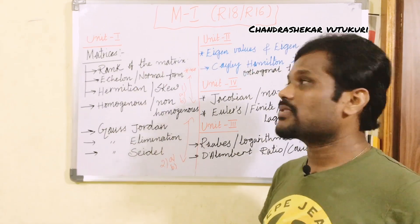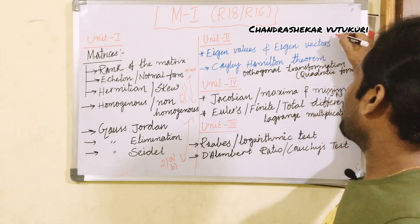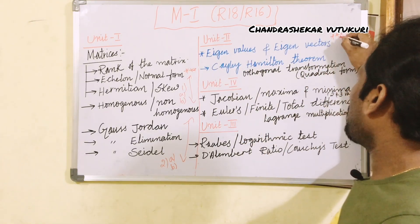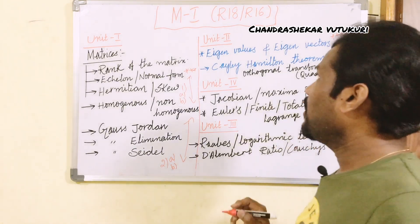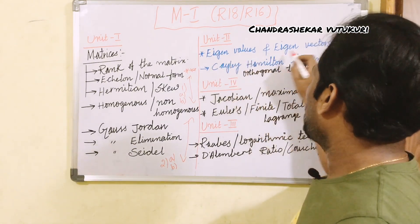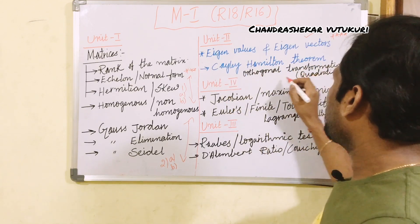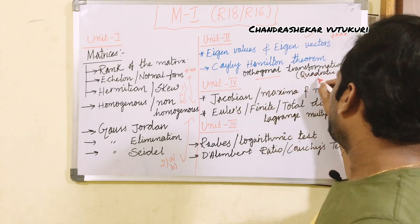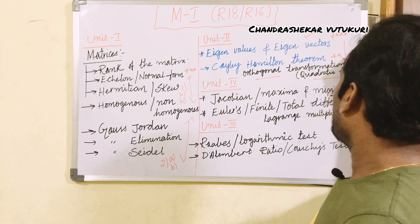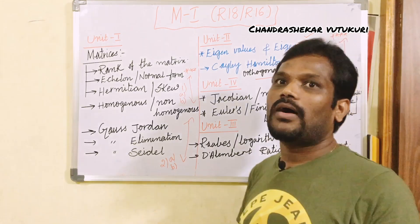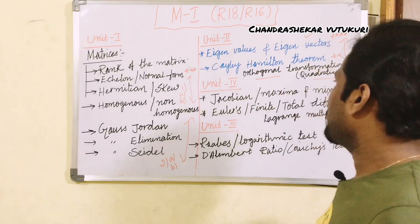Unit 2 is all about eigenvalues and eigenvectors, which is a very important sure-shot question. You are supposed to work out this along with the Cayley-Hamilton theorem and orthogonal transformation using quadratic form. From this part you may be getting two questions, or sometimes they ask one and a half questions only.